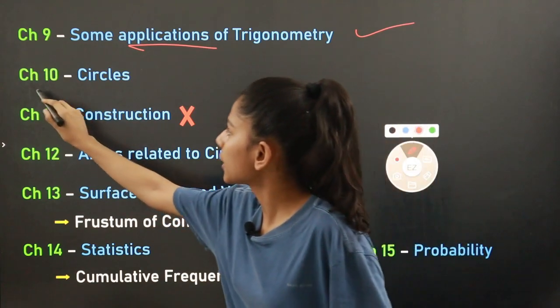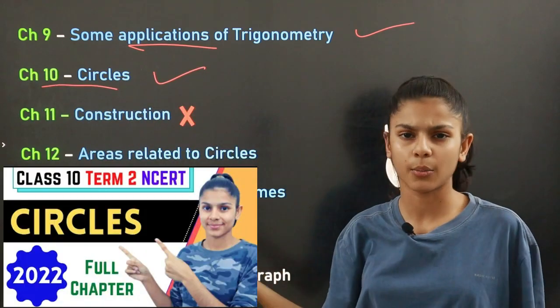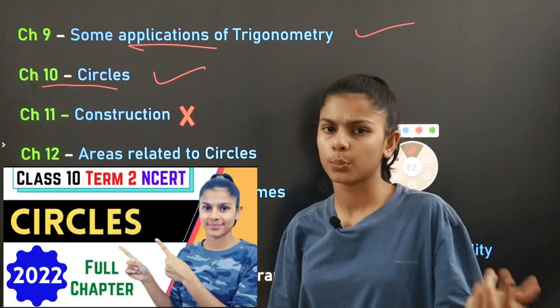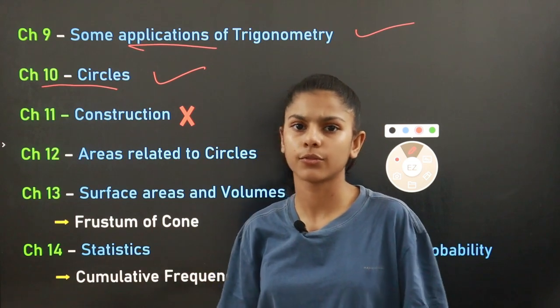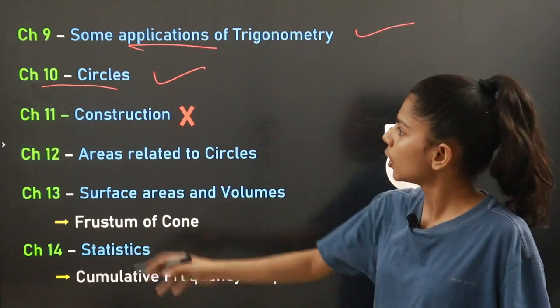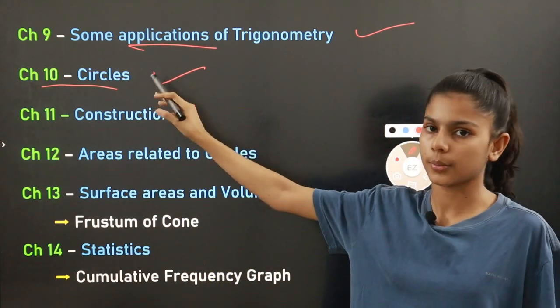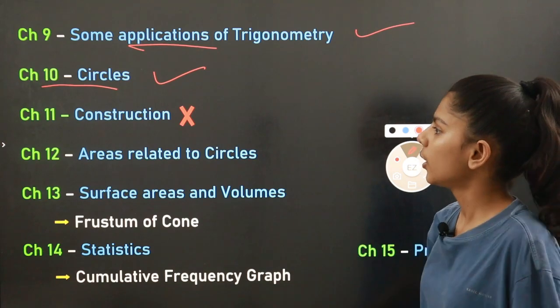Chapter number ten is Circles. This is also the whole chapter. It is a small chapter with two theorems that you are required to prove. Chapter number ten circles will be the complete chapter.